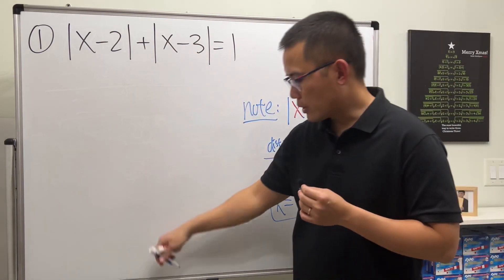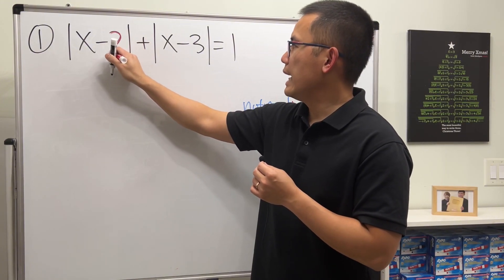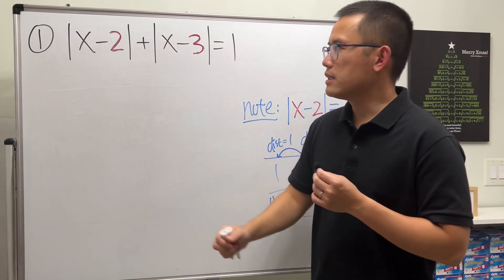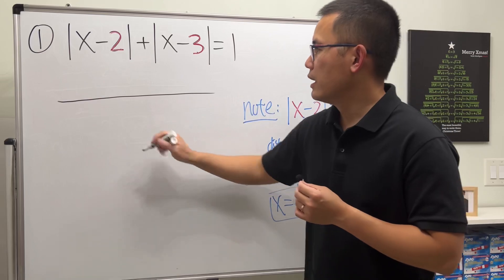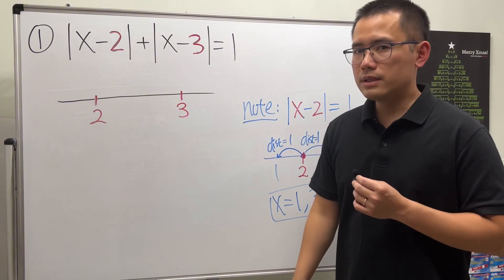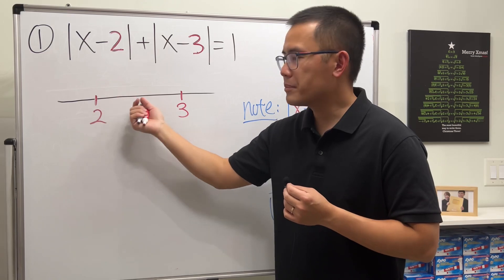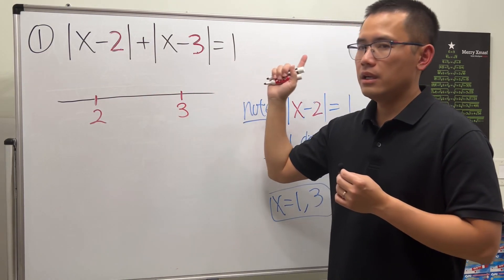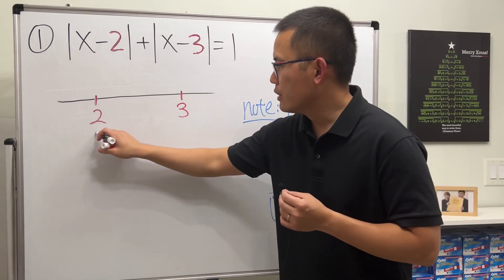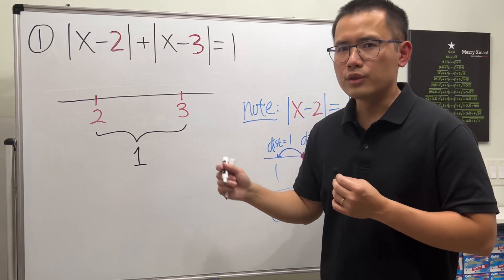Now for this equation, notice we have both x minus 2 and x minus 3 inside absolute values. So we want the distance between x and 2, and then add the distance between x and 3, to equal 1. What's so special about the 1? Well, the 1 happens to be the distance between 2 and 3.